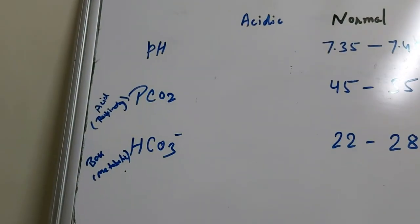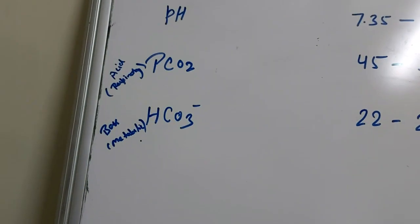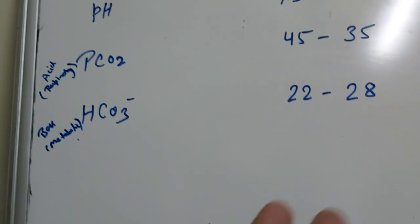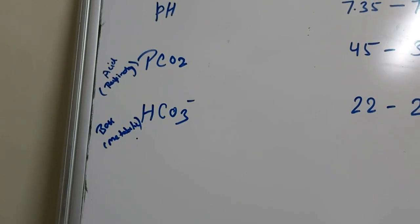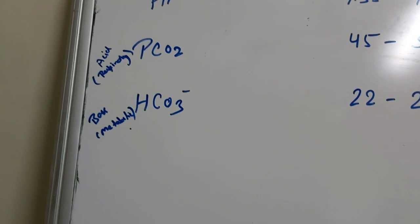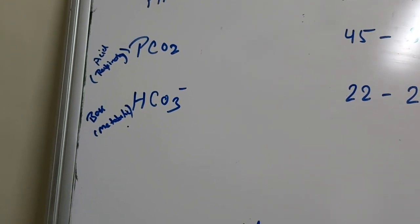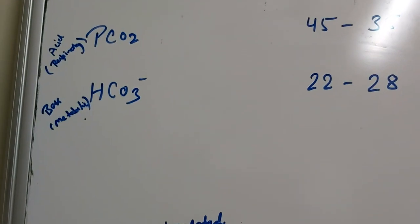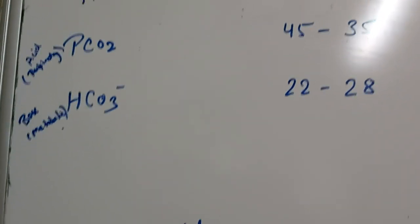And if it is vice versa, means in the acidic condition we will compare with the alkali, and in the alkalosis we will see the acid. If alkali is not increasing, that is in the normal range, then it is uncompensated.